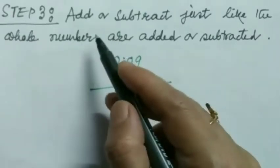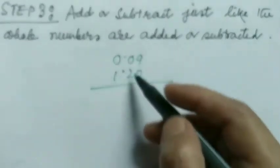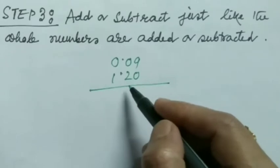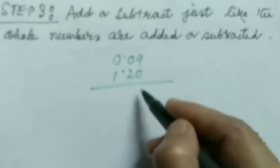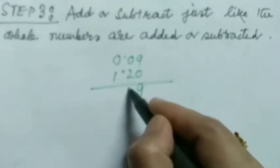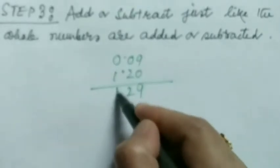Step number three: add or subtract just like the whole numbers are added or subtracted. So we'll do the sum just like the whole numbers we do. So 9 plus 0 is 9, 0 plus 2 is 2, 0 plus 1 is 1.